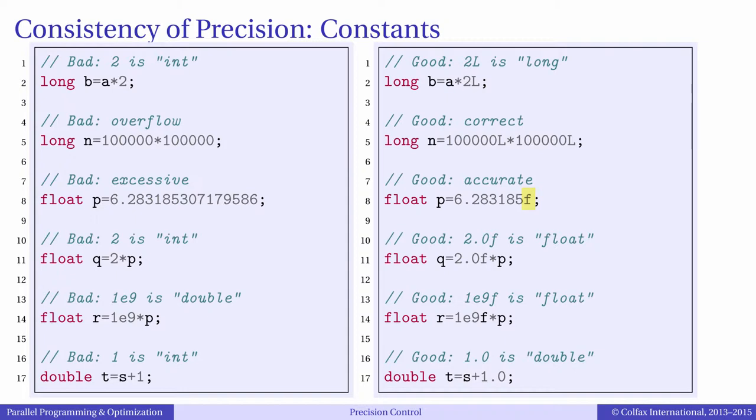This can be very important for performance. For example, here we multiply a float by an int. And the compiler will have to implement a type conversion from int to float. Here we multiply a float by a double. This is even worse, because the value of P must be promoted to double, multiplication must be done in double precision, and then everything must be demoted to single precision. The more efficient way to write those expressions is by using literal constants with a decimal point and suffix F.